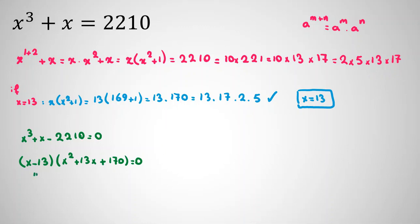The first term is zero, we've checked that x = 13. Now we should focus on the second term equal to zero. Let's check x² + 13x + 170 = 0.